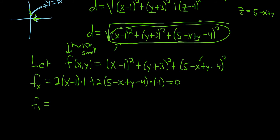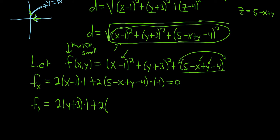Taking the partial of f with respect to y: the first piece is 0, the second gives 2 times y plus 3 times 1. And the last piece contributes plus 2 times 5 minus x plus y minus 4 times 1. Set this equal to zero.